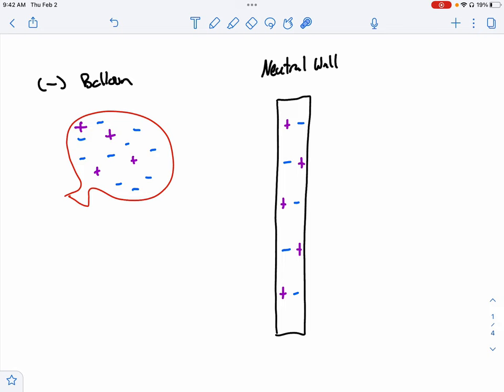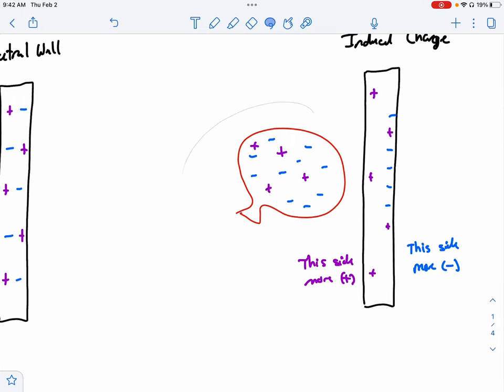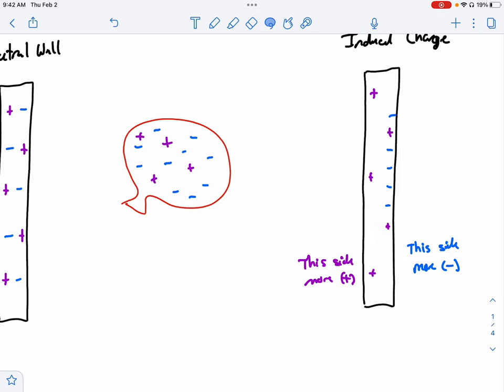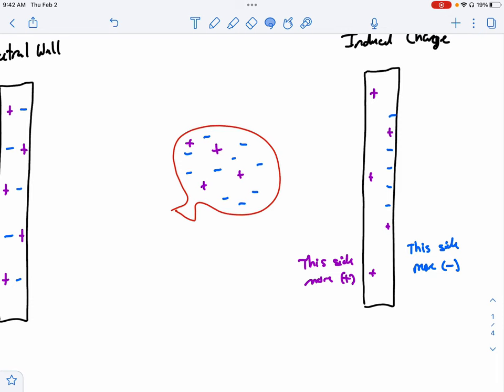What makes this neutral is we have a balance between positives and negatives. So they all kind of equal out and cancel each other so that the net effect is there's no charge of the wall. However, if I were to bring that balloon closer to the wall, so I'm bringing it close.